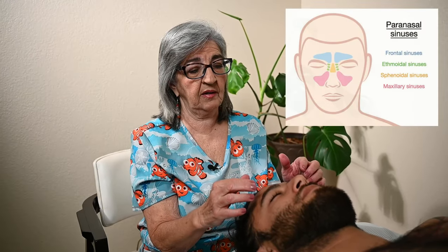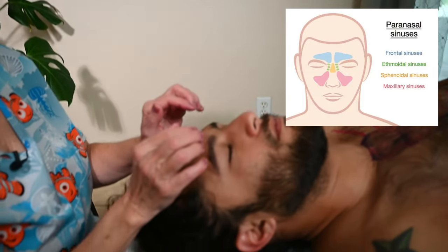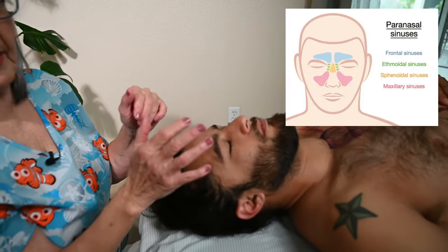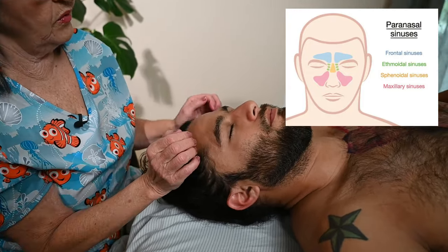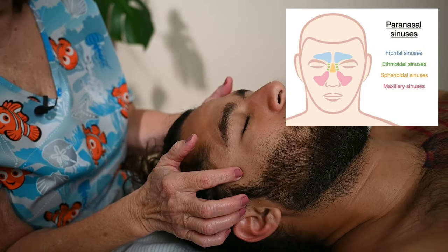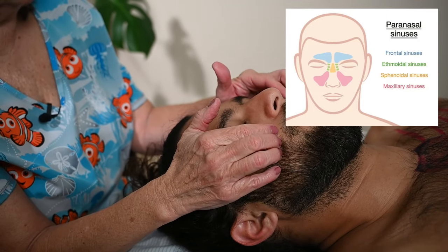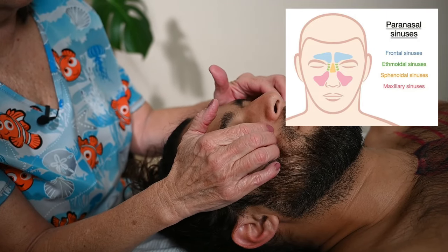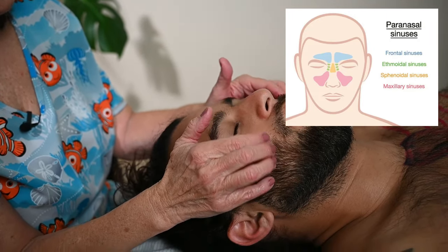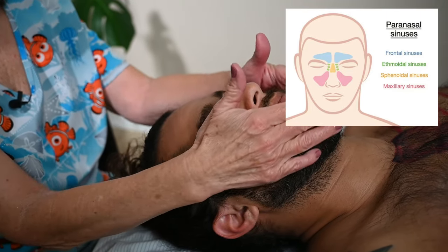Let's start with the sinus headaches. We have four paranasal sinuses on the face: the frontal, the sphenoidal, the ethmoidal — which are behind the eyes — and then the maxillary sinuses, which are the largest.